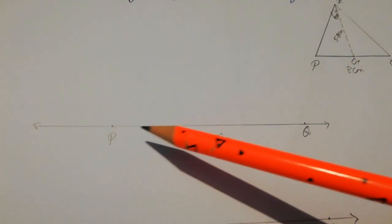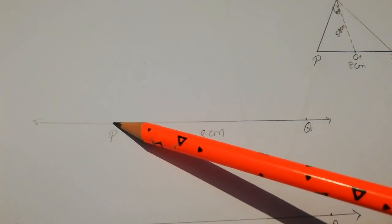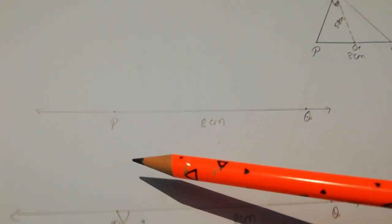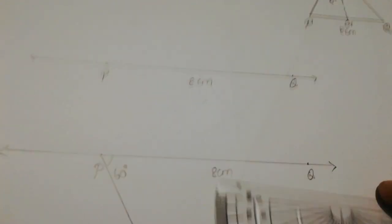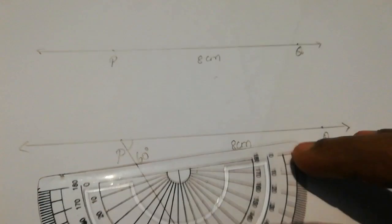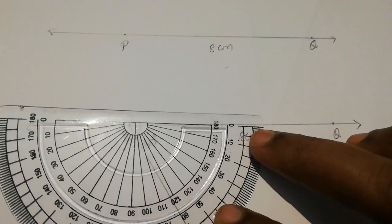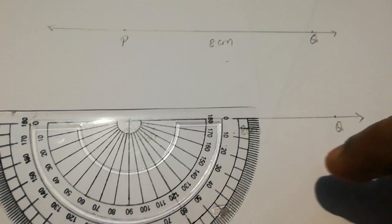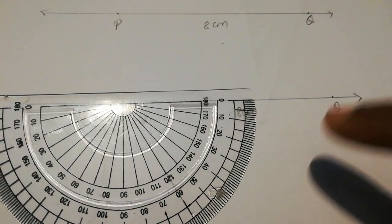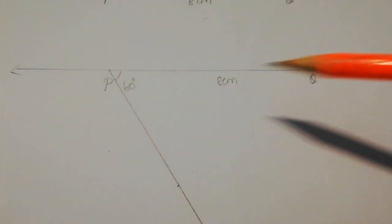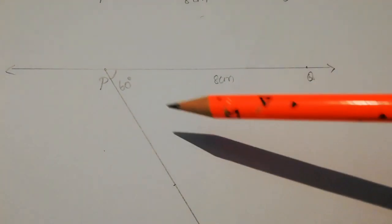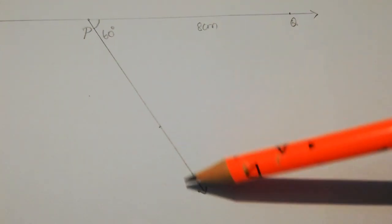Next, we construct 60 degrees at point. We draw the 60 degree angle line and join. PQ is 8 centimeter, and we mark the 60 degree angle and join the line.